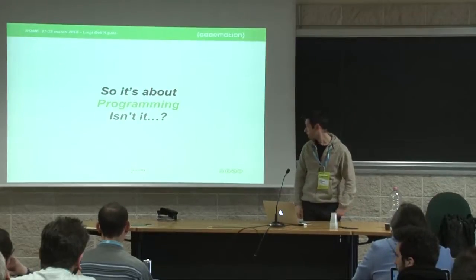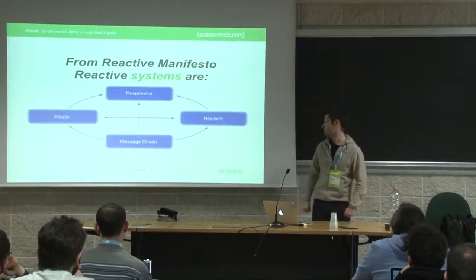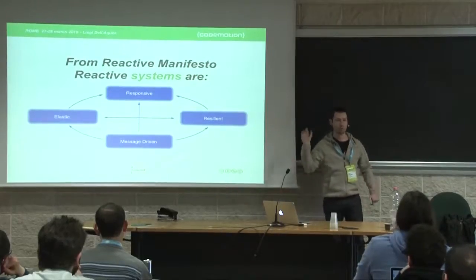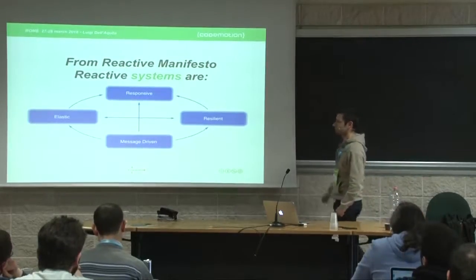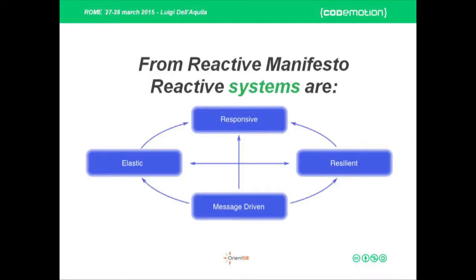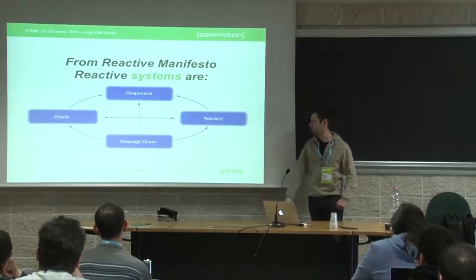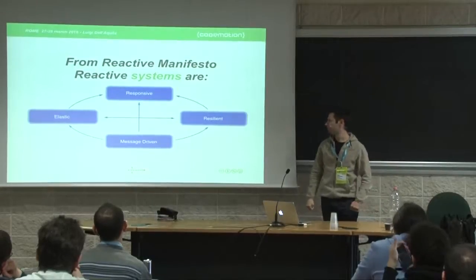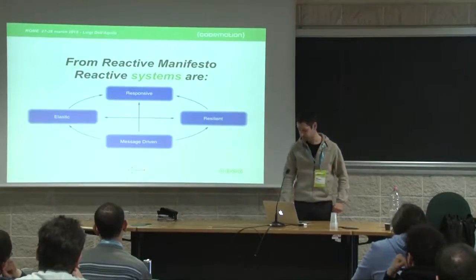I started reading the Reactive Manifesto. Maybe some of you in this room know the Reactive Manifesto? The Reactive Manifesto says that reactive systems act this way: they're responsive, they're resilient, they're elastic, and they're message-driven. But this is not about programming actually — the Manifesto says 'reactive systems', so it's more general. And if you look at these points, you see that responsive involves user experience.